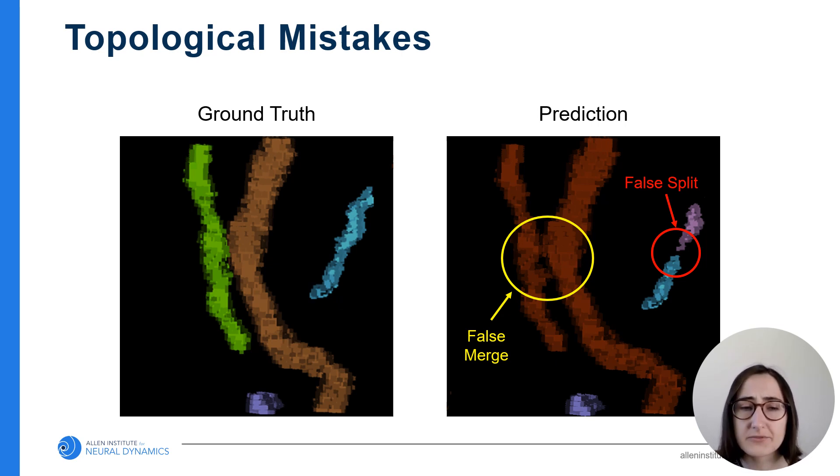The other type of mistake is a false split, which occurs when the network predicts that a neuron branch is broken into two or more pieces. These mistakes can be time-consuming to fix and difficult to detect.